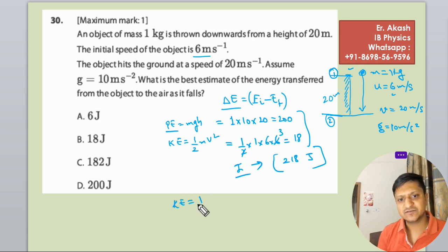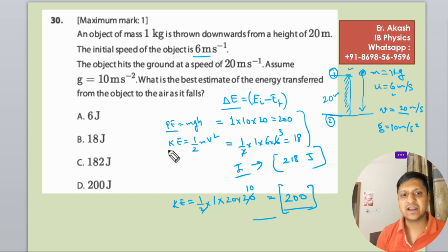Kinetic energy is half m, m is 1 kg, and velocity is 20. So 20 into 20, that is 200. So at final, 200 is the total energy and 218 is the initial energy.